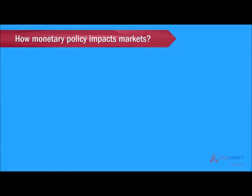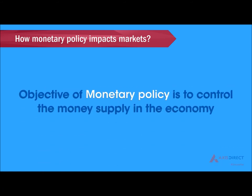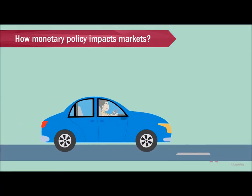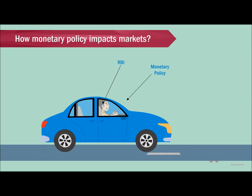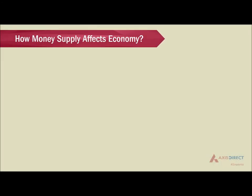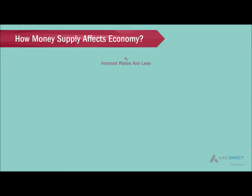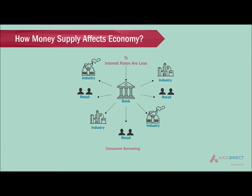Now let us look at how monetary policy impacts markets. The objective of monetary policy is to control the money supply in the economy. Just like a driver uses the steering wheel to direct the car in the right direction, RBI through its monetary policy increases and decreases the money supply in order to speed up or slow down the economy. When interest rates rise, both consumer borrowing and spending are reduced, and economic activity and money supply fall. When interest rates are reduced, both consumer borrowing and spending rise, and economic activity and money supply rise.